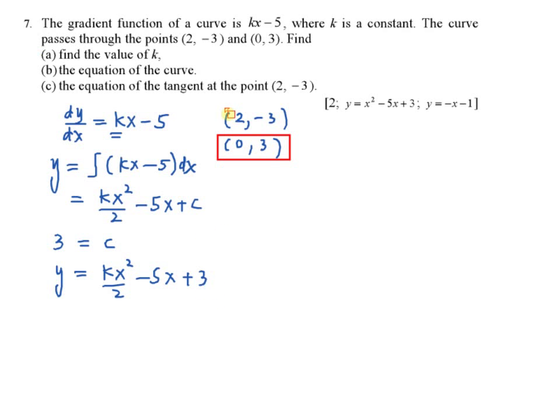You left another point here, (2, -3). Okay, substitute into the equation, negative 3 equal to k, your x is 2, 2 squared over 2 minus 5 times 2 plus 3. Therefore, you can find the value of k, which is equal to 2.